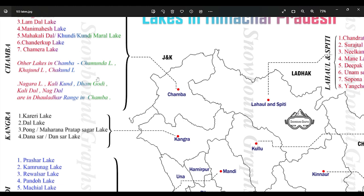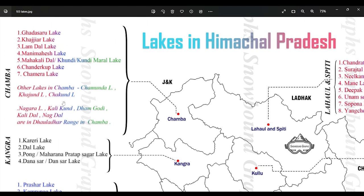All are in the Dhauladhar Range in Chamba. I must also tell you that Lamda Lake is a group of seven lakes.